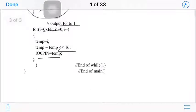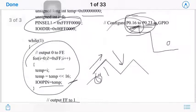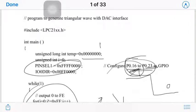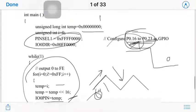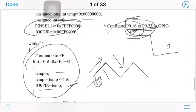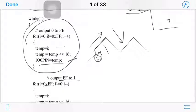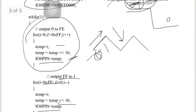To summarize: temp is initialized to 0, pin select and IO0DIR are configured. We increment from 0 to 0xFE, then decrement from 0xFF to 1, using two for loops. In each iteration, the value is assigned to temp, shifted left by 16 bit positions because we are sending on pins 16 to 23, and then assigned to IO0PIN.